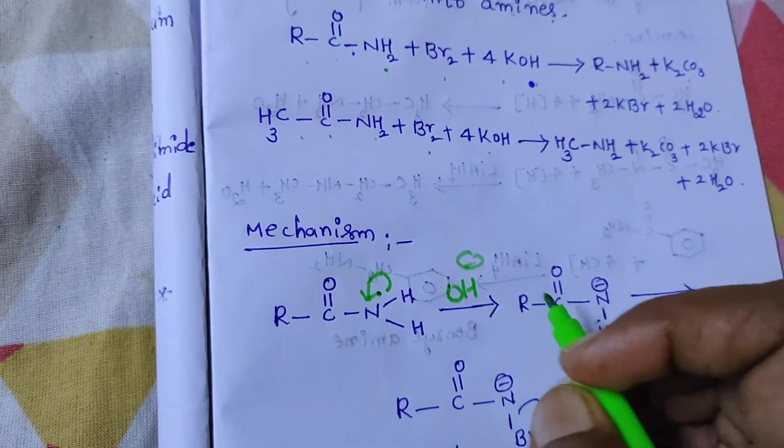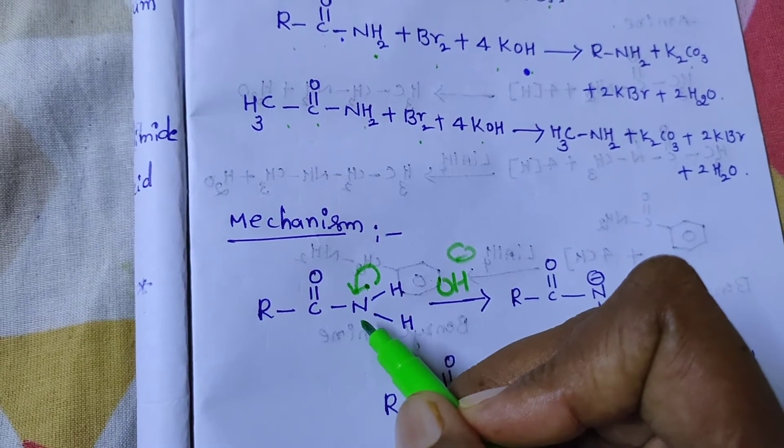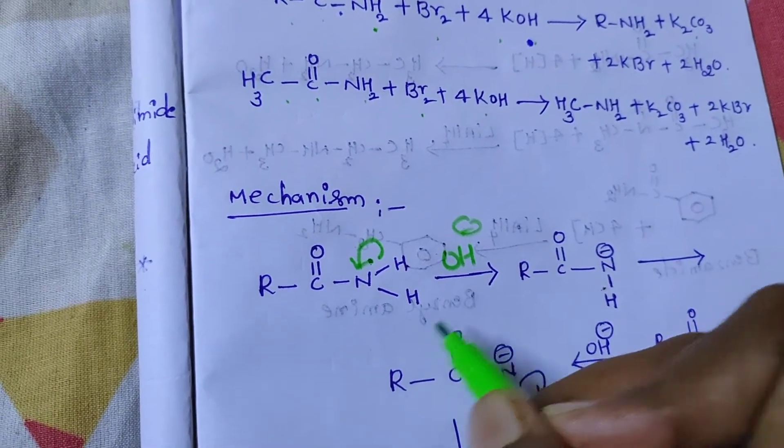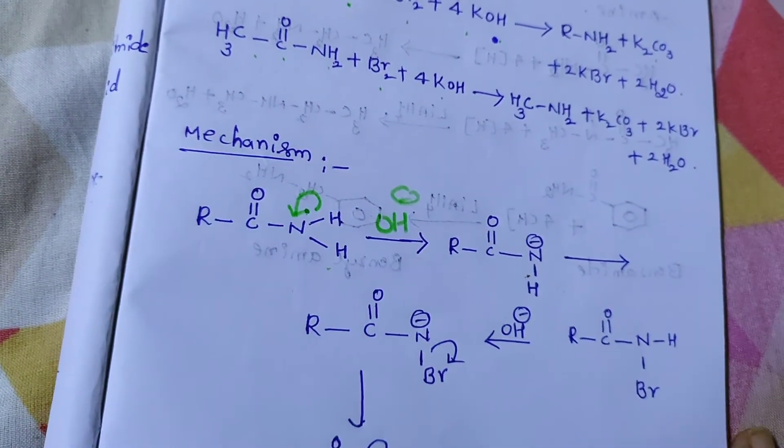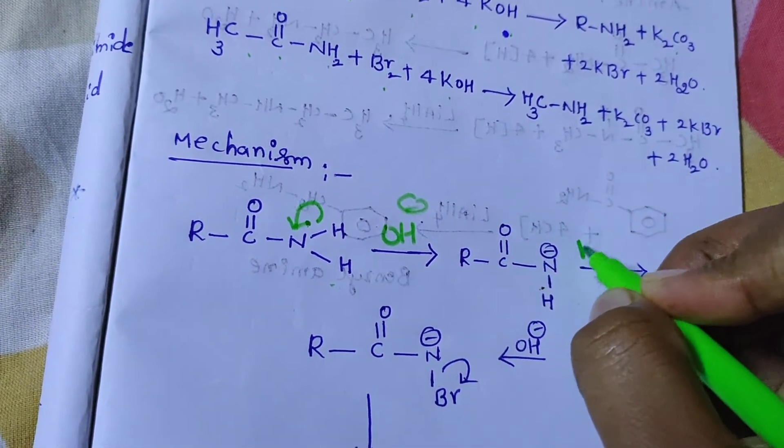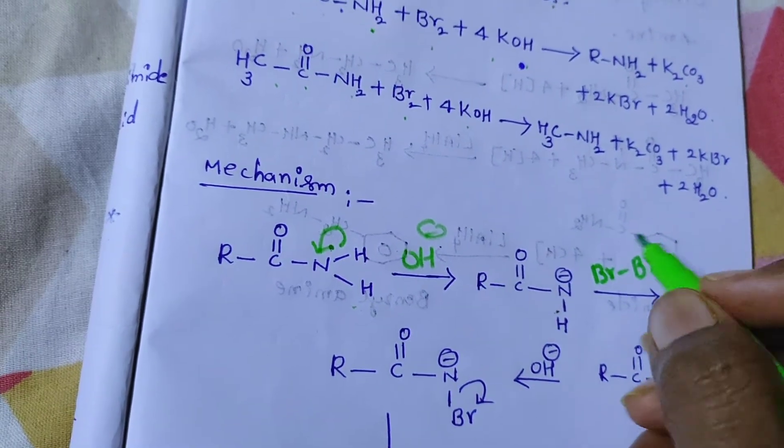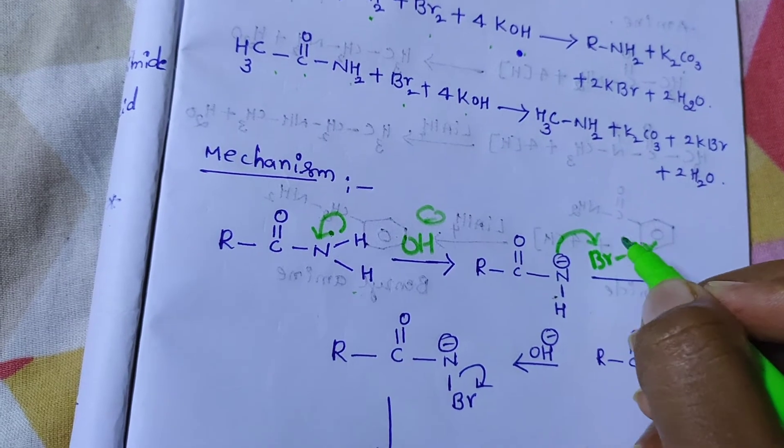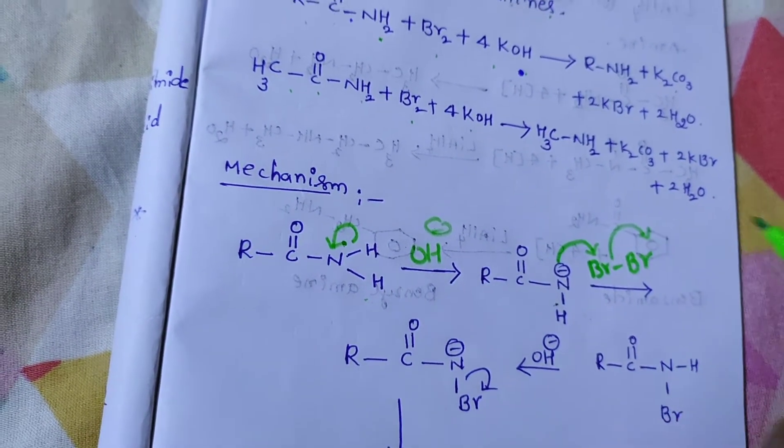Here, we have R-C double bond O. These two electrons come to nitrogen, so this nitrogen gets a negative charge. We also have one hydrogen. We remove this hydrogen. Next step, I am going to use Br2. This is going to attack here and this leaves this bromine. We get R-C double bond O-N-Br-H.